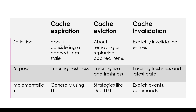To summarize: expiration is perfect for scenarios where entries can be considered stale after a certain period of time. Cache eviction helps in managing the size of the cache and prioritizing frequently accessed items. Cache invalidation is required when changes in the source data need to be reflected immediately in the cache. In a nutshell, it's all about managing the freshness and size of the cache data — in some cases it happens naturally, but in others it is event-driven or happens proactively. They all help in optimizing the performance and relevance of cache data.